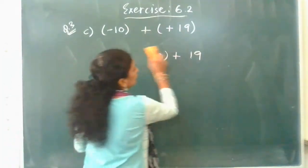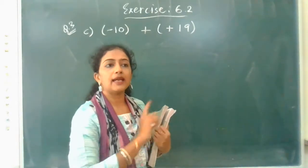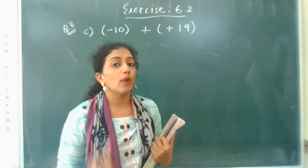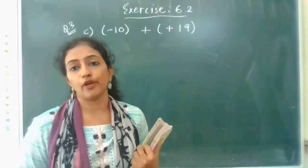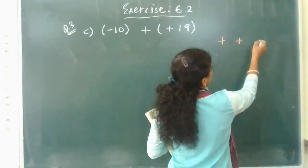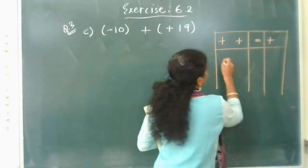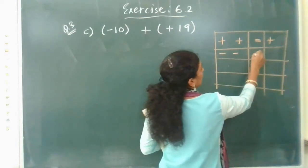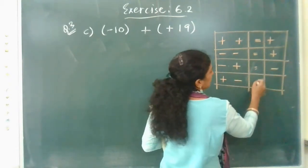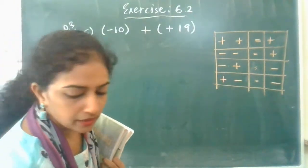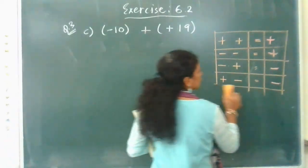Please understand the difference between the sign of a number — the sign of an integer — and the operating sign. Students often get confused between the two. The operating sign is always between two integers. Now, let me show you the table for changing two signs into one sign. Two plus signs change into one plus sign. Two minus signs change into a plus sign. One negative and one positive sign change into a minus sign. One plus and one minus also change into a minus sign. This is easy to remember — in an exam, you can just note down this table.